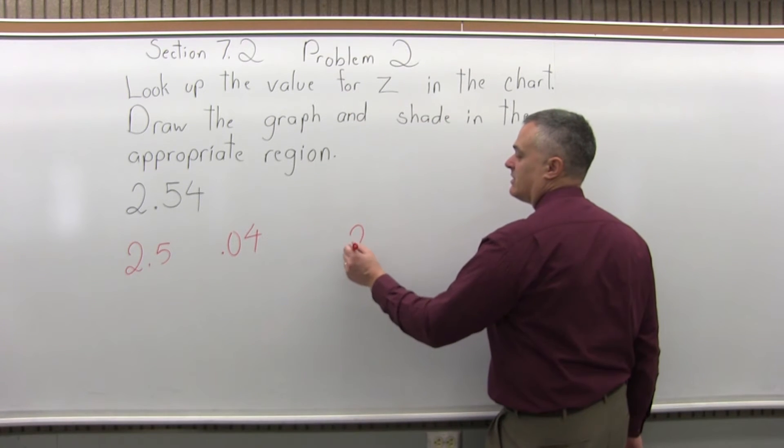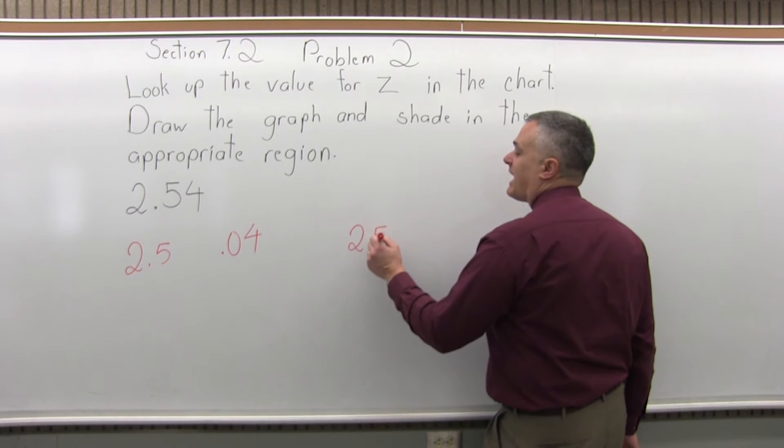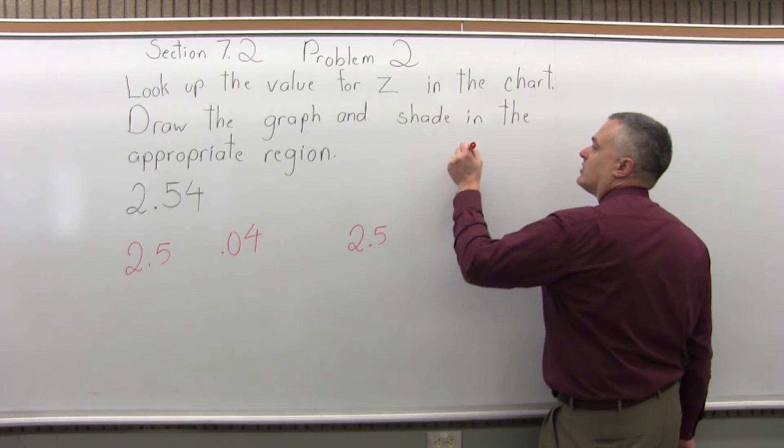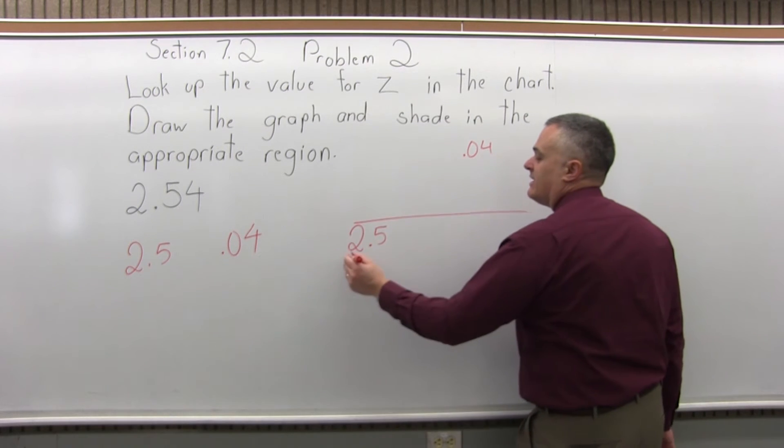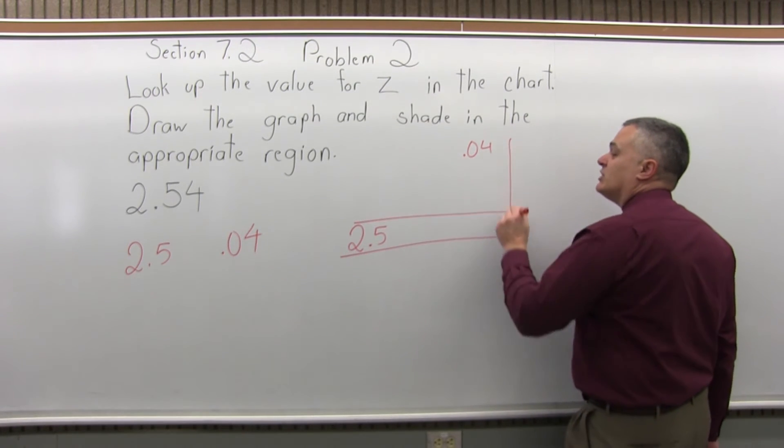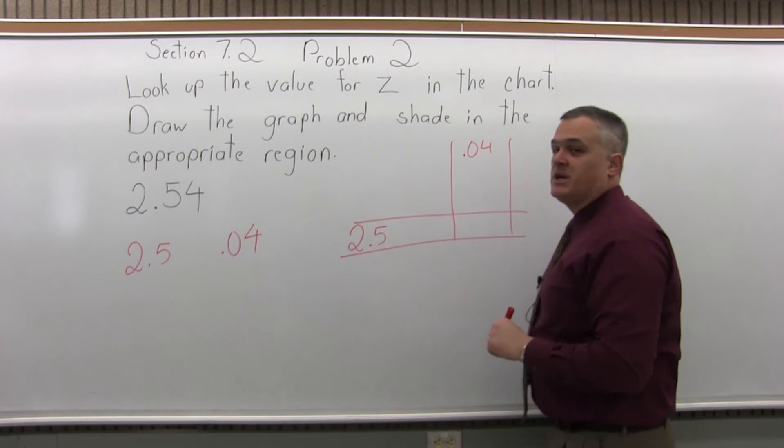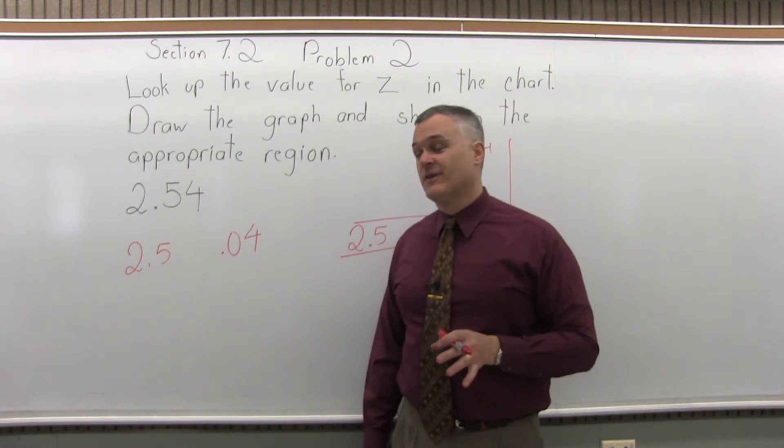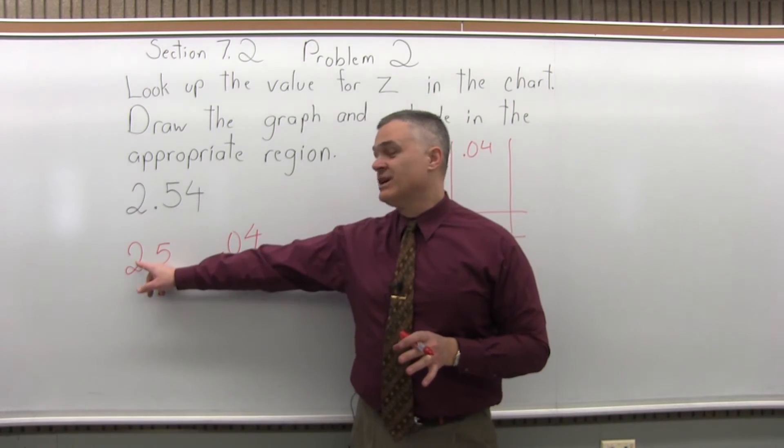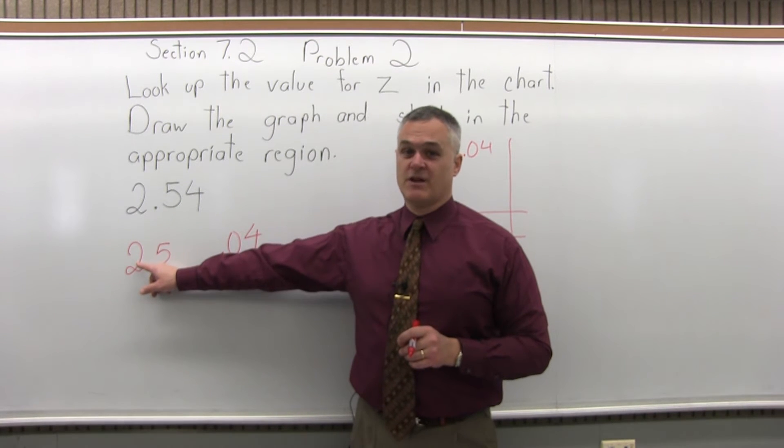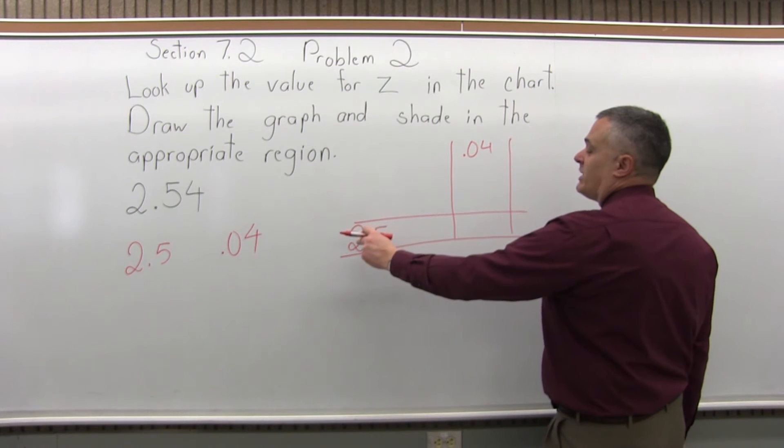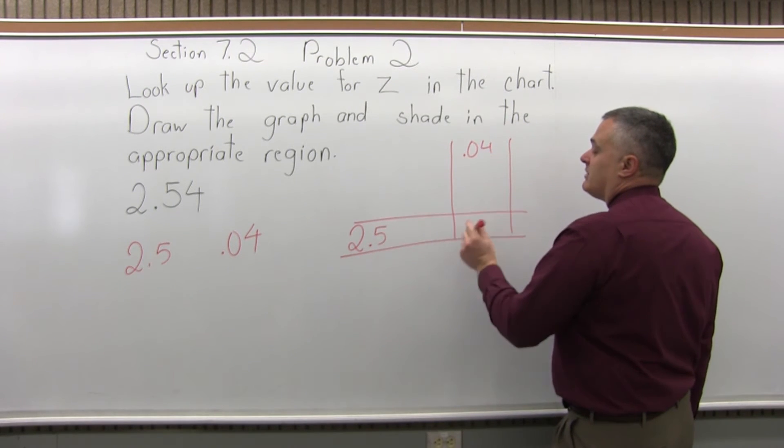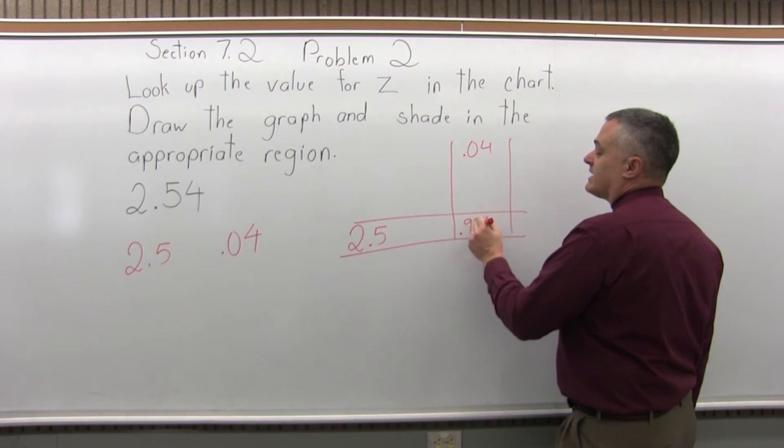So, you're going to go to that chart, go to the 2.5 row, go to the .04 column, and you'll see where those intersect. Now, the chart is on two pages. One page is for positive values to look up, the other page is for negative values. Make sure you pay attention, there's a positive 2.54, very common mistake. So, if you look at the 2.5 row, the .04 column, see where they intersect, they will intersect at .9945.